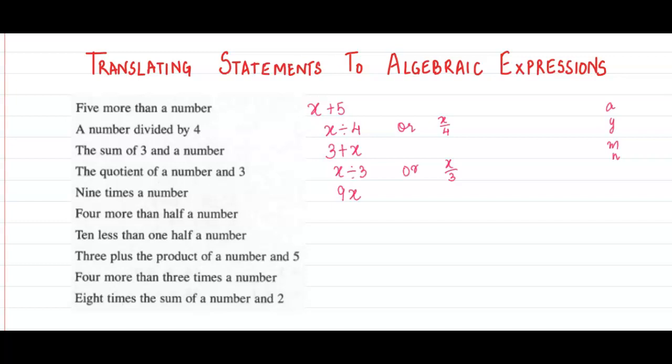4 more than half a number. Half a number, let's take m as the unknown number. Half a number would be m divided by 2, and 4 more than this means we will add 4. Another way to represent it is m divided by 2 plus 4.